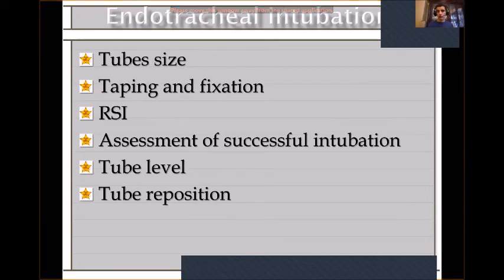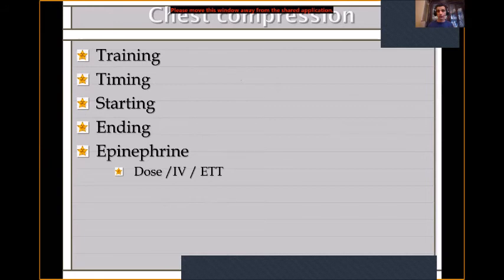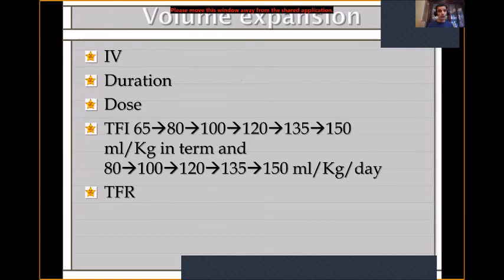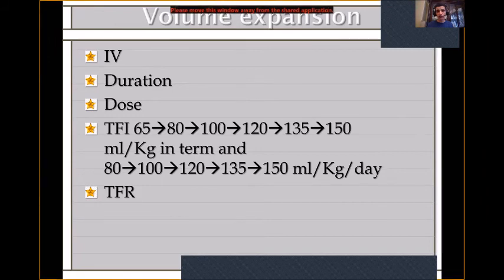When intubating, use the correct tube size. You need RSI, a procedure to assess correct intubation, tube level and position, chest compression timing and training, when to give epinephrine and the dose, and IV fluid dose and duration. We start at 65 ml/kg/day in term babies and 80 ml/kg/day in preterm babies. The next day we advance to 80, 100, 120, until reaching 125 ml/kg/day. This is standard so that nurses, respiratory therapists, and pharmacists all know what to expect.